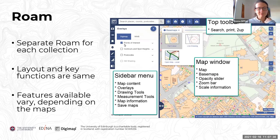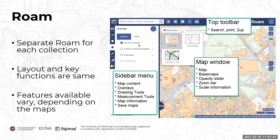In the overlays section, these are pre-prepared datasets which you can simply check the box to add to your map. The ones available in the Ordnance Survey Collection include points of interest, contours and spot heights, postcodes, and hill shading. Those overlays will vary depending on the Digimap Collection you're in — not all of them are relevant to the maps in that particular collection.